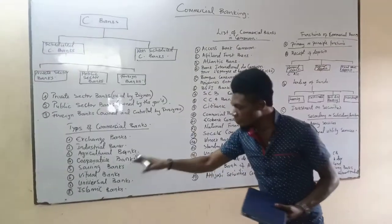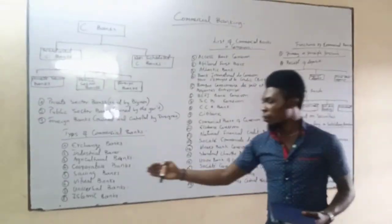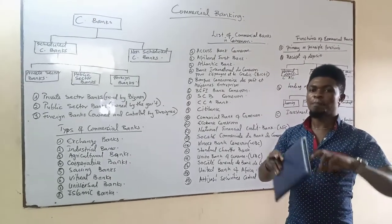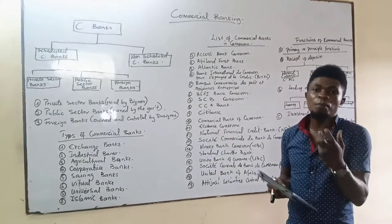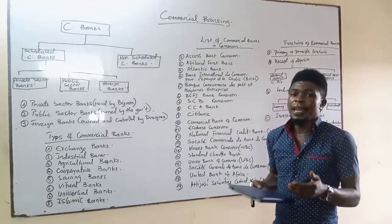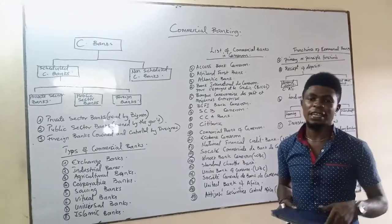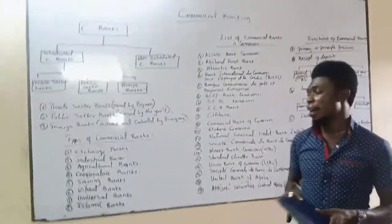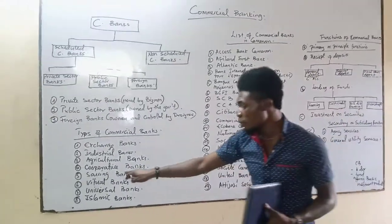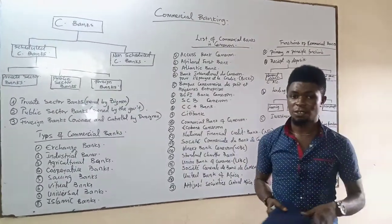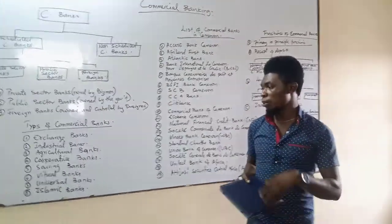We have cooperative banks — banks that generally operate in the form of corporations. Their main aim is to assist their members, give loans to those members, and help the members realize their objectives. Samples of cooperative banks include microfinance institutions that deal with their members.